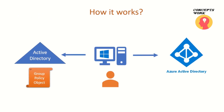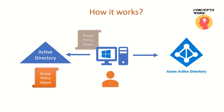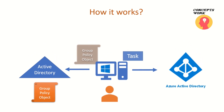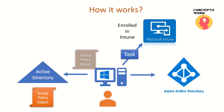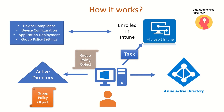Now let's talk about how exactly it works. In a typical environment, a machine is both domain joined and joined to Azure Active Directory — it's a hybrid Azure AD joined device. What we are going to do is create a Group Policy Object in our on-premises AD. Once that GPO is pushed to a specific device, a task gets created on that device and this task gets the machine enrolled to Intune.